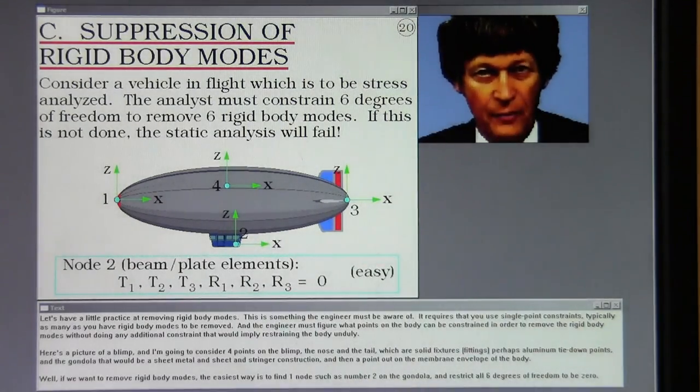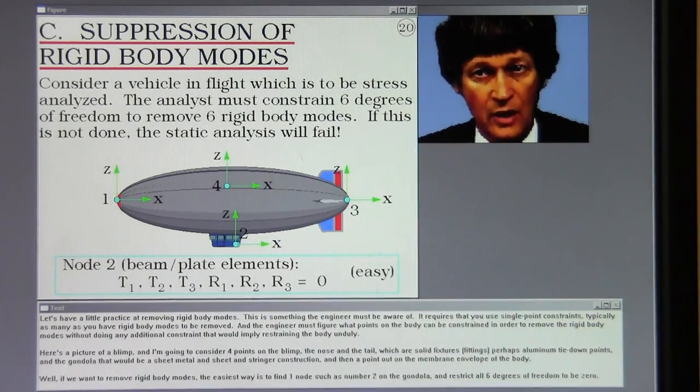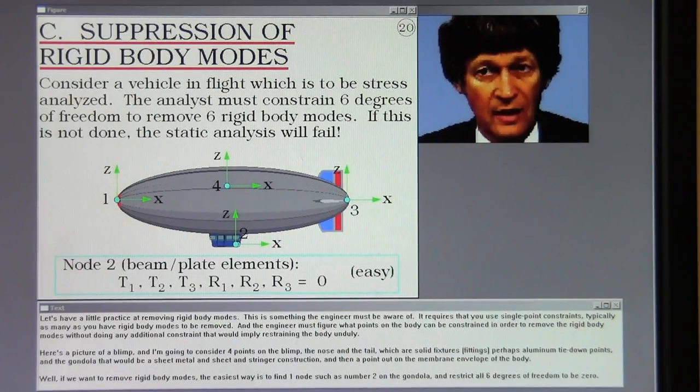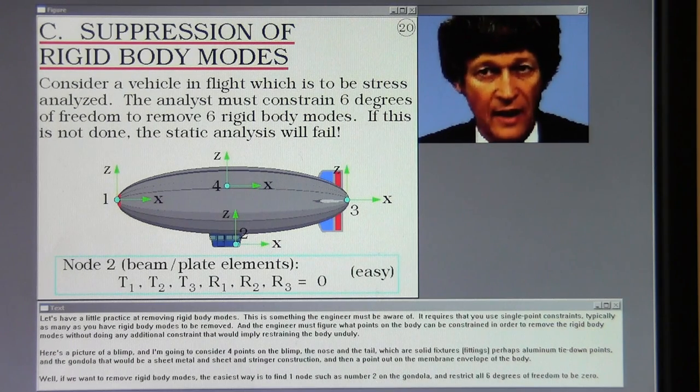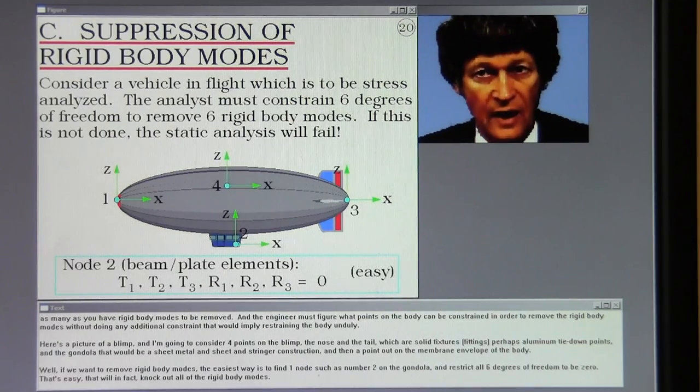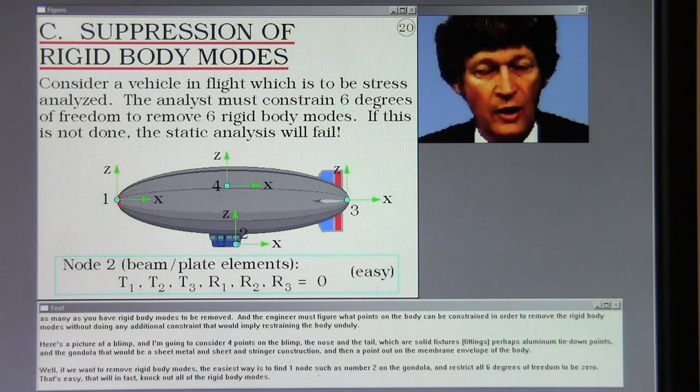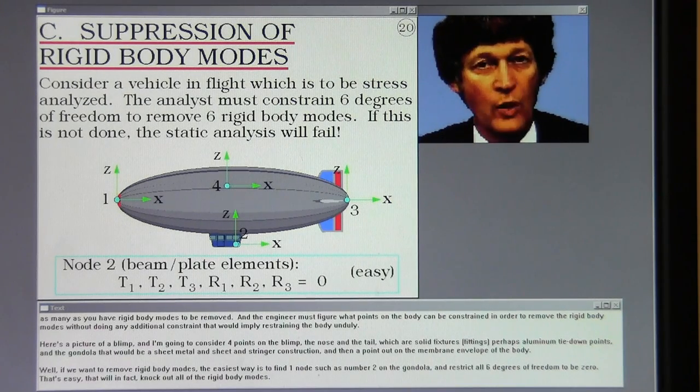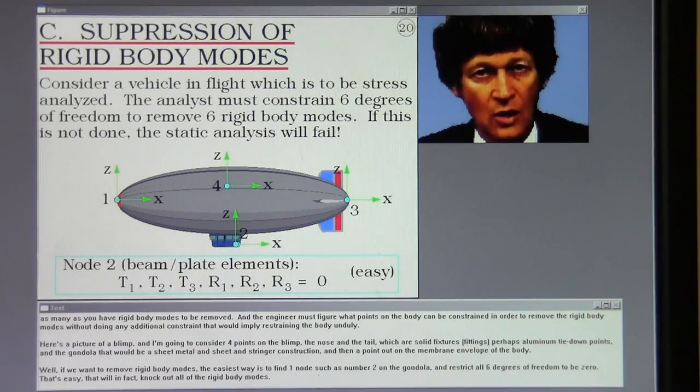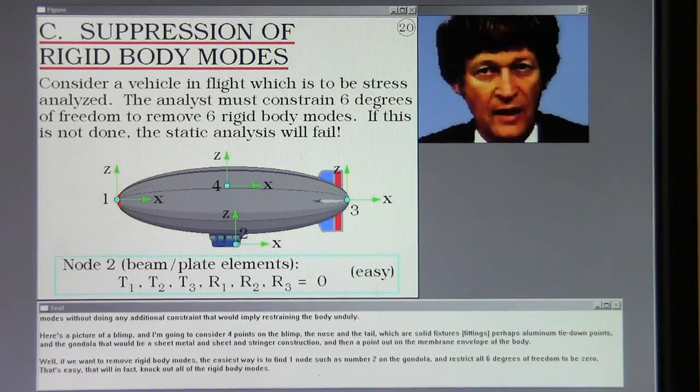Let's have a little practice at removing rigid body modes. This is something the engineer must be aware of. It requires that you use single point constraints, typically as many as you have rigid body modes to be removed. And the engineer must figure what points on the body can be constrained in order to remove the rigid body modes without doing any additional constraint that would imply restraining the body unduly.